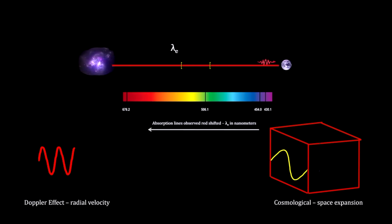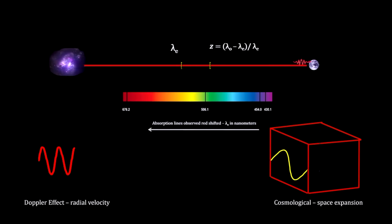But as the distance increases to hundreds of millions and billions of light years, space expansion becomes the dominant factor. In either case, we continue to measure redshift, Z, as the difference between the wavelength emitted and the wavelength observed, divided by the wavelength emitted.